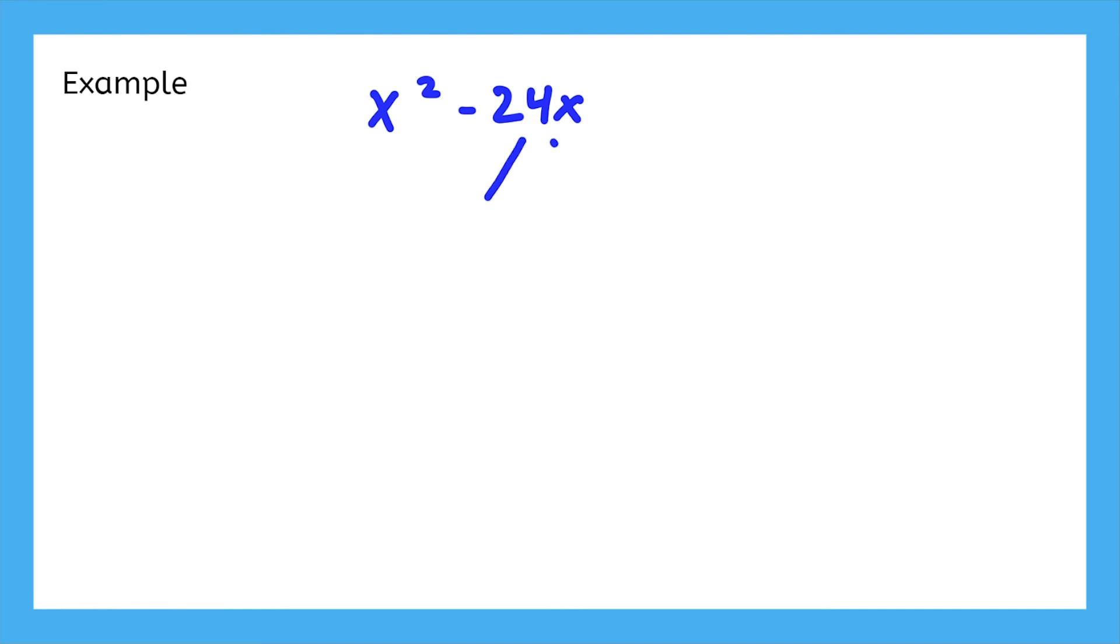In order to complete this square, we have to split negative 24 in half. So, that's negative 12 and negative 12.